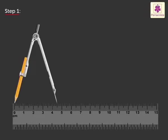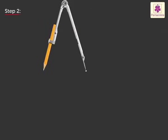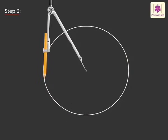Step 1: Use a ruler to set the distance between both the arms as 4.5 cm. Step 2: Place the point of the compass on a fixed point. Step 3: Move the pencil arm around to draw the circle.